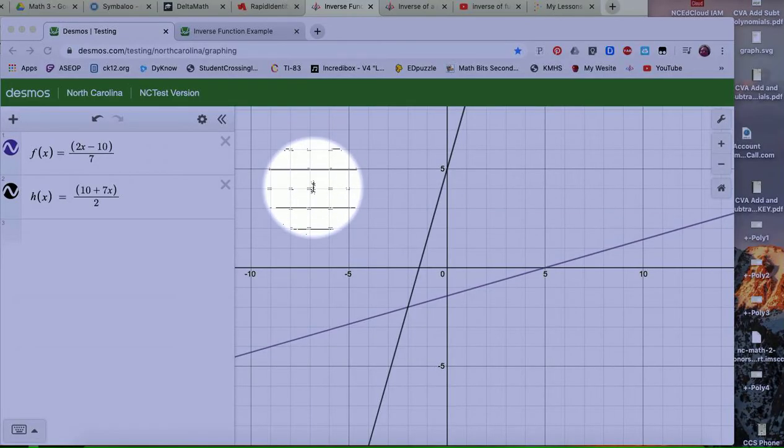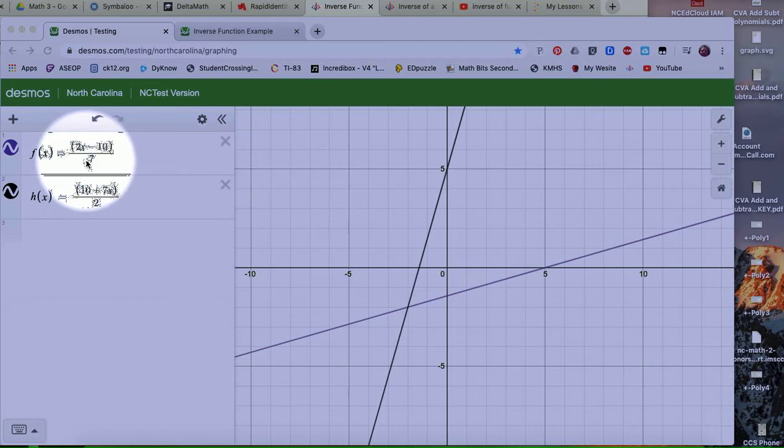I wanted to show you an example. The question may be, are these two functions inverses of one another? So I'm looking, I typed in the first function that was given to me, and I just took these at random questions. So f of x was the quantity 2x minus 10 divided by 7. h of x is the quantity 10 plus 7x divided by 2.